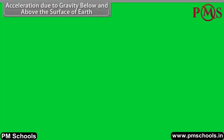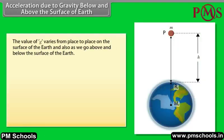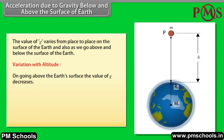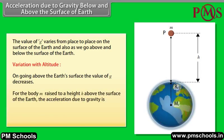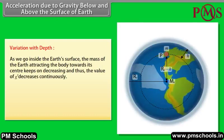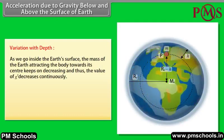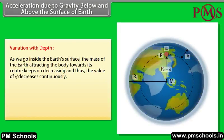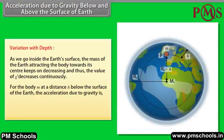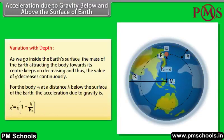The acceleration due to gravity below and above the surface of earth: the value of g varies from place to place on the surface of the earth, and also as we go above and below the surface. Variation with altitude: going above the earth's surface, the value of g decreases. For a body raised to a height h above the surface, g' = g(1 - 2h/r). Variation with depth: as we go inside the earth's surface, the mass of the earth attracting the body towards its center keeps on decreasing, and thus the value of g decreases continuously. For a body at a depth h below the surface, g' = g(1 - h/Rₑ).